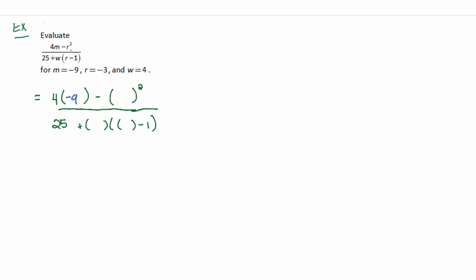The next parentheses, which is supposed to be an R, we'll replace that with negative 3. Now, downstairs in the denominator, the first set of parentheses after the plus sign is supposed to be a W, which we'll replace with 4. Then in this inner set of parentheses, right before you subtract 1, that's supposed to be an R, which is negative 3.